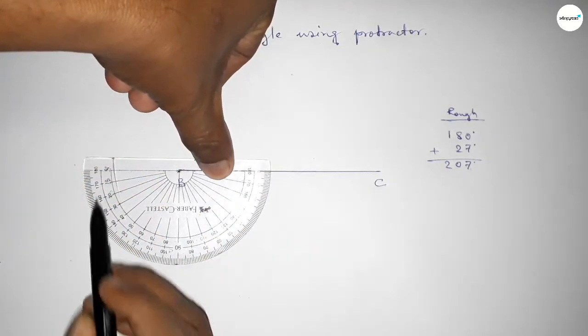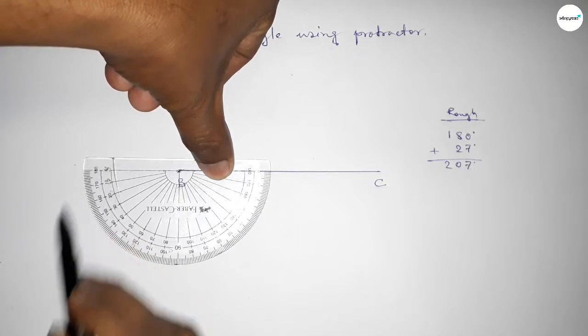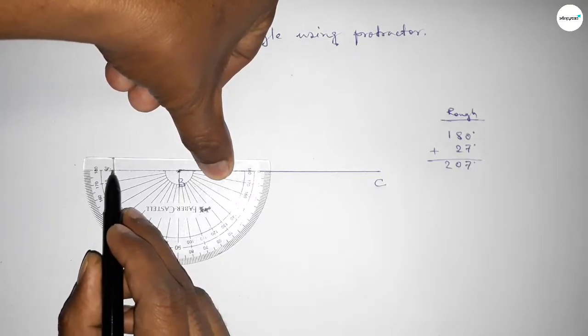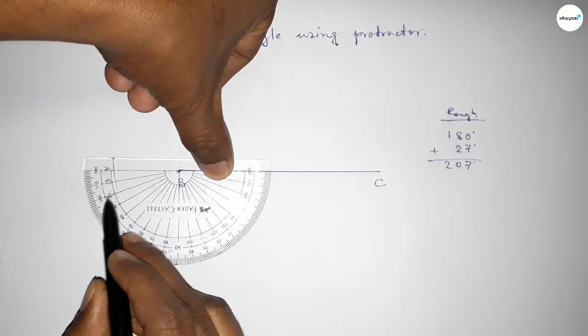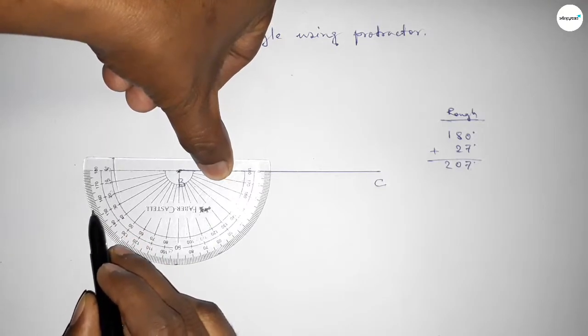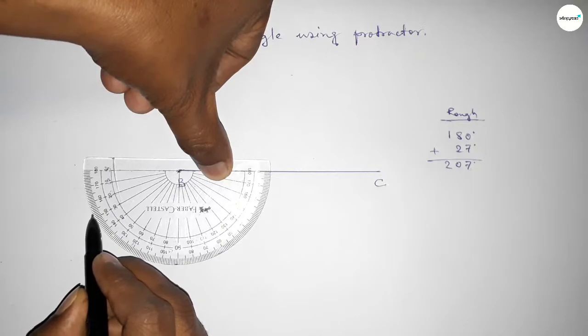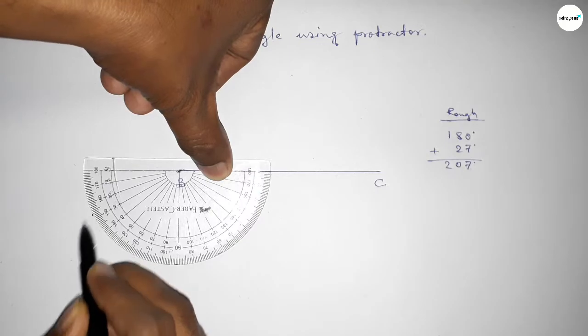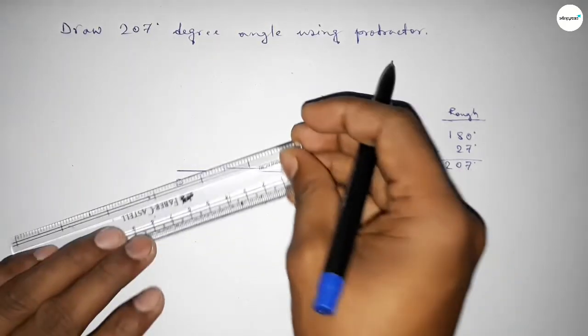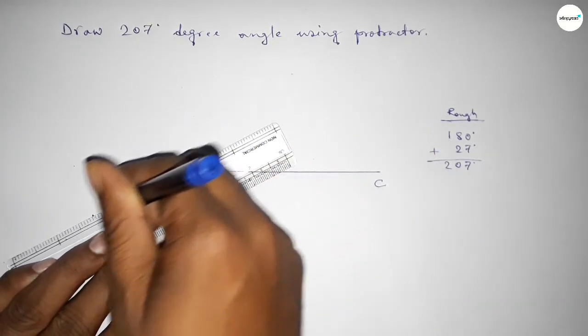This is the 180 degree angle. Now starting from 0, 10, 20, 25, 26, 27 - this is 27 degrees. By adding 27 degrees to 180 degrees, we get 207 degrees. Now joining this side and taking point A here.